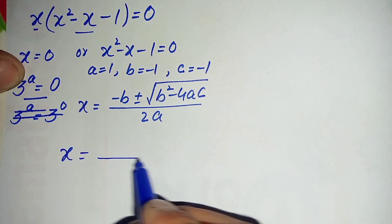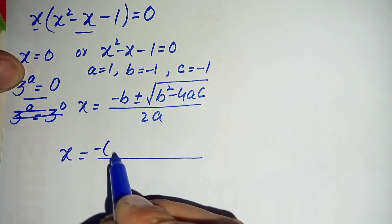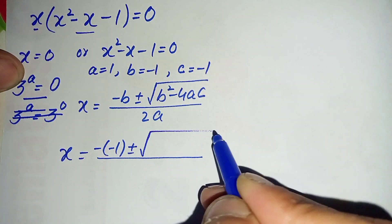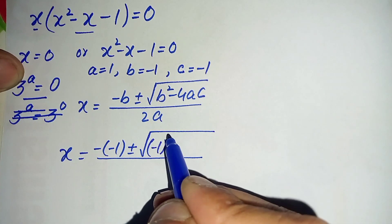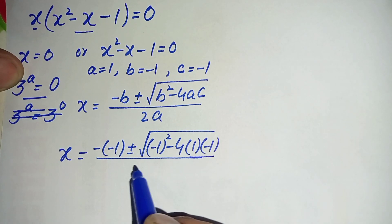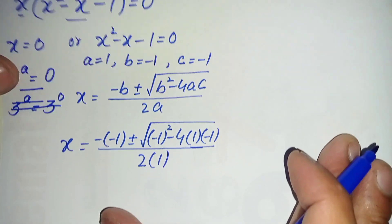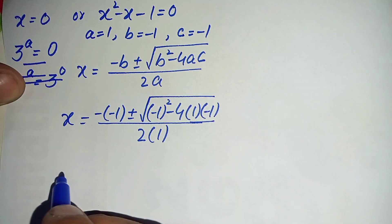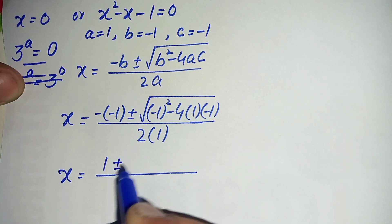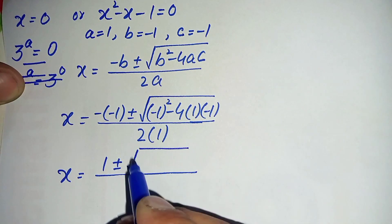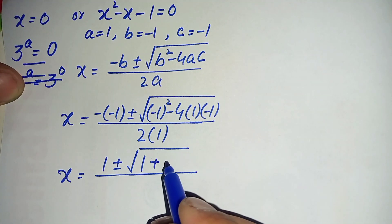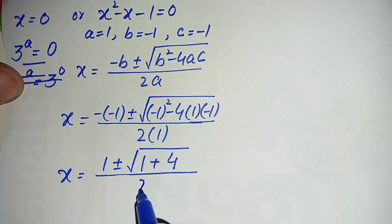Replacing a, b, c with their values: x equals minus b, where b is minus 1, plus or minus square root of b squared, which is minus 1 squared, minus 4ac divided by 2a. Simplifying: negative times negative is positive, so we get 1 plus 4 times 1 times 1 equals 4, divided by 2.